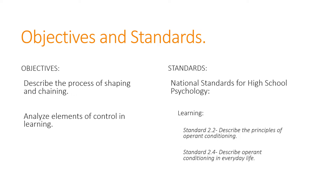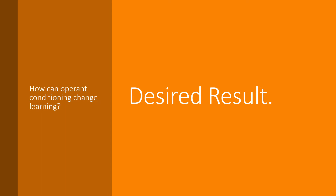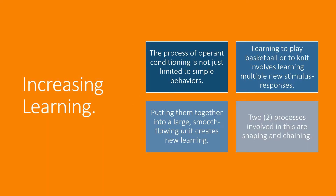Our desired result: how can operant conditioning change learning? The process of operant conditioning is not just limited to simple behavior. Learning to play basketball or to knit involves multiple new stimulus-response connections. We need to learn how to dribble, bounce, and shoot the ball — many different steps. Putting them together into a large, smooth, flowing unit creates new learning. This occurs through two processes called shaping and chaining.